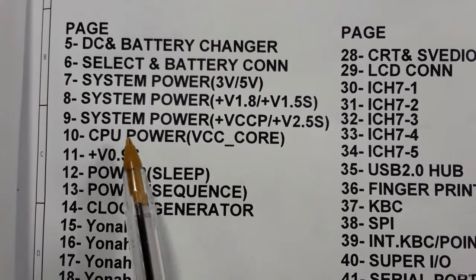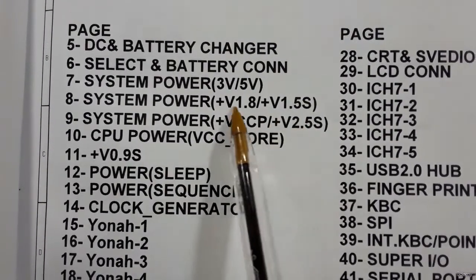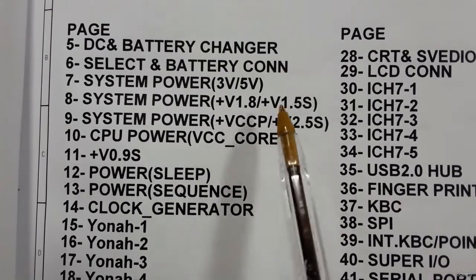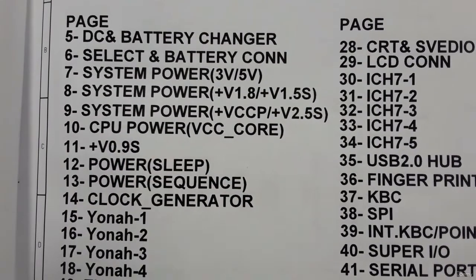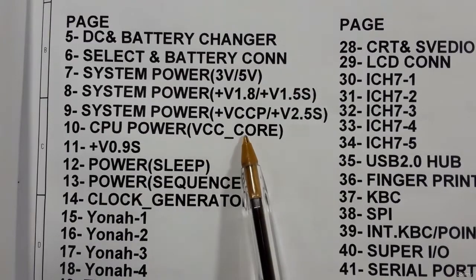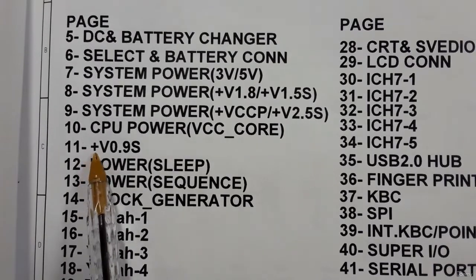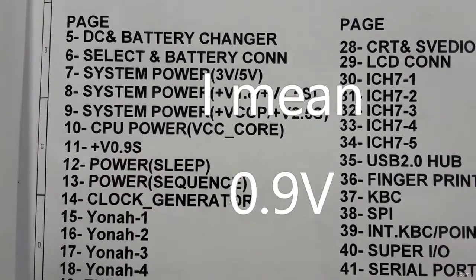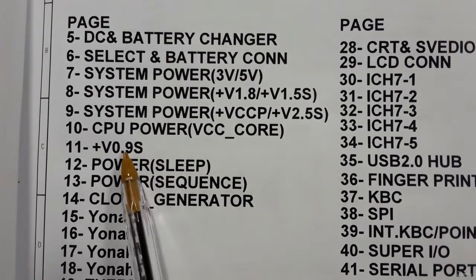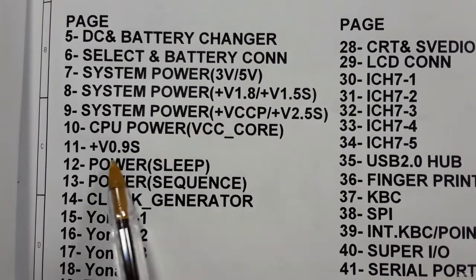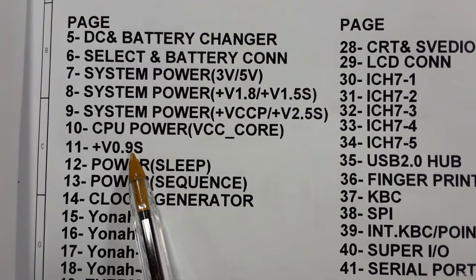Here we have the system power VCCP and 2.5 volts. VCCP is the power for chips on the motherboard, including the GMCH and the CPU. Here we also have the CPU power — the main power for the CPU. The RAM has two kinds of power: the main power is 1.8 volts, and 0.9 volts is the power for the RAM terminals.